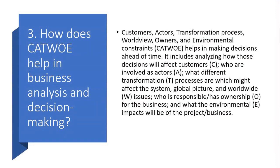Question 3: How does CATWOE help in business analysis and decision making? CATWOE stands for Customers, Actors, Transformation process, Worldview, Owners, and Environmental constraints. It helps in making decisions ahead of time by analyzing how those decisions will affect customers (C), who are involved as actors (A), what different transformation (T) processes might affect the system, the global picture and worldview (W), who has ownership (O) of the business, and what the environmental (E) impacts of the project will be.